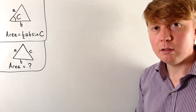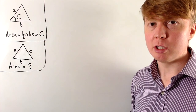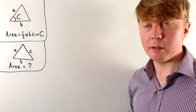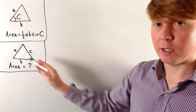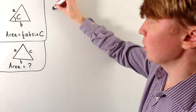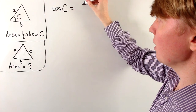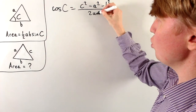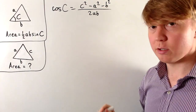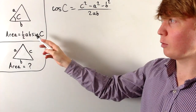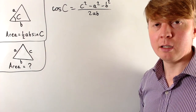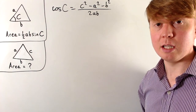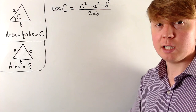Finally, let's look at the case where we're given all three side lengths but don't know any of the angles. Intuitively, we'd use the cosine rule to find one of the angles: cos C equals (c² minus a² minus b²) all divided by 2ab. We'd find angle C, then use a half AB sine C. But going from the cosine rule expression for cos C to a nice expression for sine C is a bit messy.